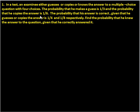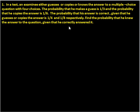So what do we know? For attempting the answer, the examinee can guess, copy, or know the answer. The probability that he guesses is 1/3, and the probability he copies is 1/6. We need to think about what the probability that he knows the answer will be. Further, the probability that his answer is correct given that he guesses is 1/4, and given that he copies it is 1/8. We have to find the probability that he knew the answer given that he answered correctly.